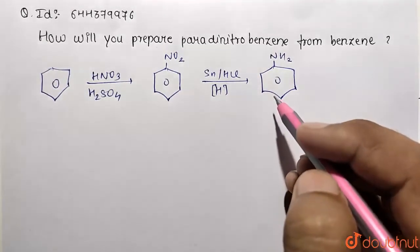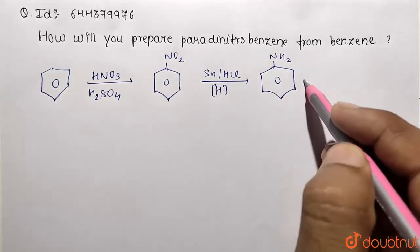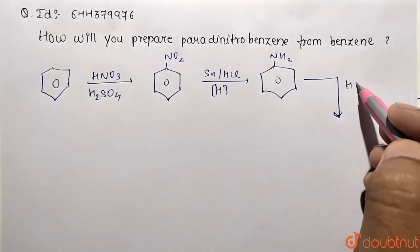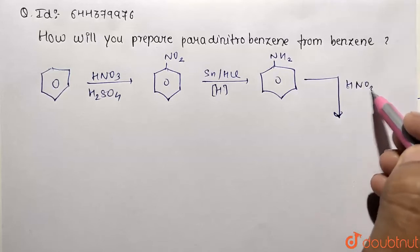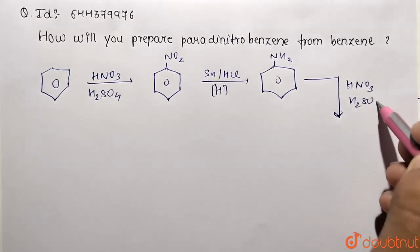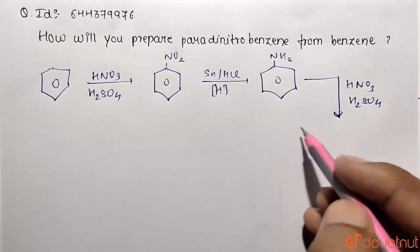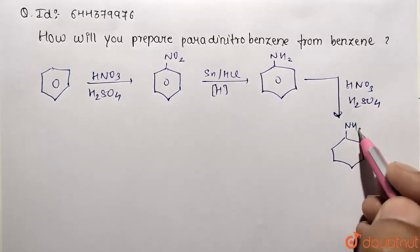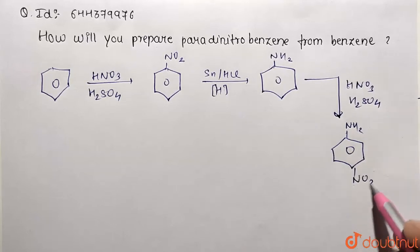Now what you need to do, again do the nitration. So what happens, nitration will be done at the para position. So you need to use our corresponding HNO3 and H2SO4. And what is the set of product we are going to get now? This is our aniline substituted with nitro at the para position.